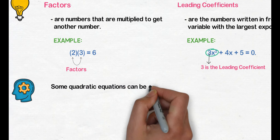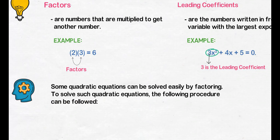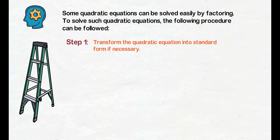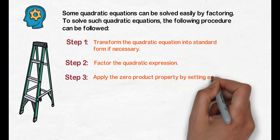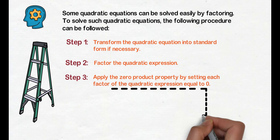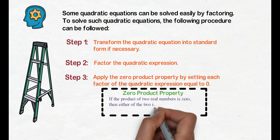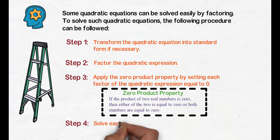Some quadratic equations can be solved easily by factoring. To solve such quadratic equations, the following procedures can be followed. Step 1: transform the quadratic equation into standard form if necessary. Step 2: factor the quadratic expression. Step 3: apply the zero product property by setting each factor equal to 0 — if the product of two real numbers is 0, then either of the two is equal to 0, or both numbers are equal to 0. Step 4: solve each resulting equation.